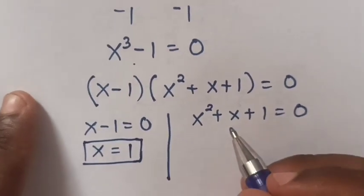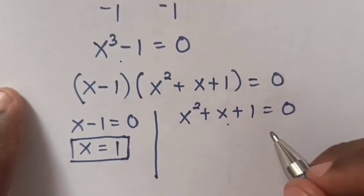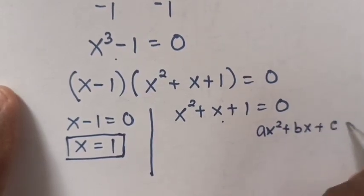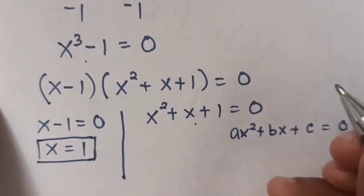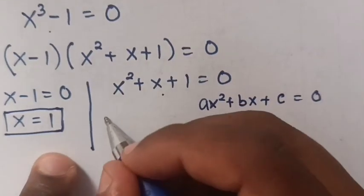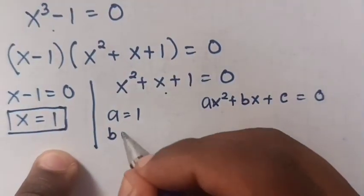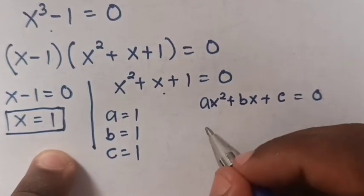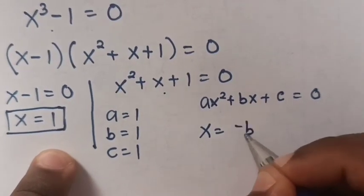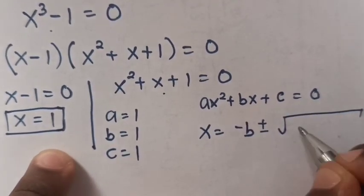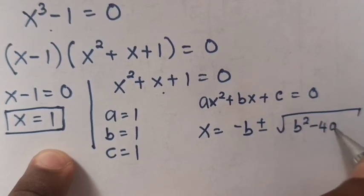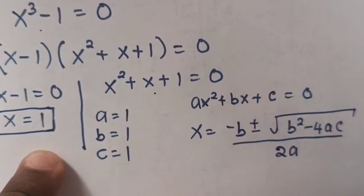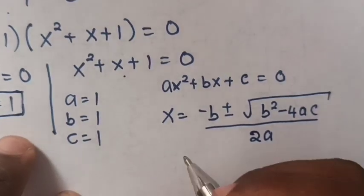Now from the quadratic equation x² + x + 1 = 0, in the form ax² + bx + c = 0, the value of a is 1, b is 1, and c is 1. Therefore to find the value of x, we use the quadratic formula: x = (-b ± √(b² - 4ac)) / 2a.